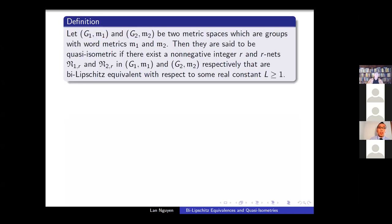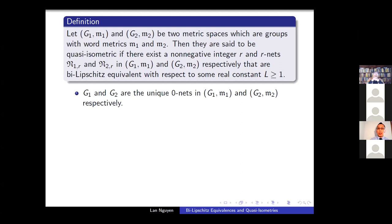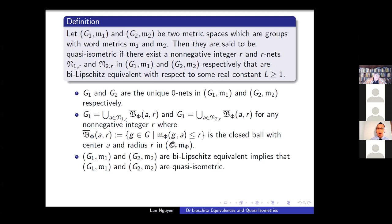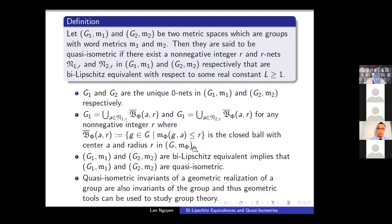If you have two metric spaces which are groups with word metrics M_1 and M_2, then they are said to be quasi-isometric if there exists a non-negative integer R and R-nets N_1 and N_2 in these two spaces respectively that are bi-Lipschitz equivalent with respect to some real constant L. G_1 and G_2 themselves are 0-nets in their respective spaces. Bi-Lipschitz equivalence implies quasi-isometry — so if two spaces are not quasi-isometric, they are not bi-Lipschitz equivalent. Quasi-isometric invariants of the geometric realization of a group are also invariants of the group, and these geometric tools can be used to study group theory.